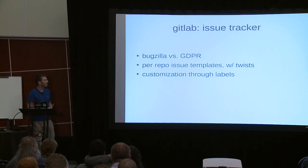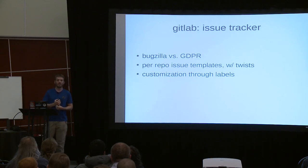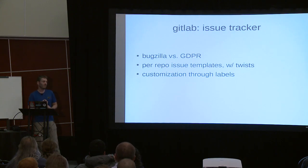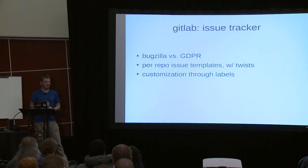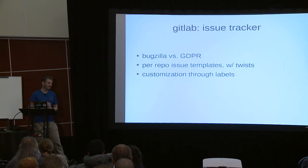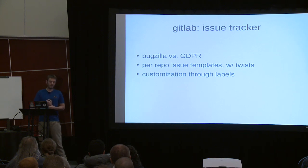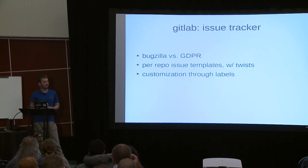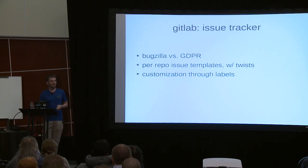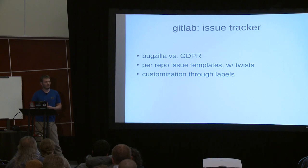There's also an issue tracker. The FDO admins are a bit freaked out about privacy regulations because Bugzilla looks like a private submission except that at the other end it fans out to your public mailing list. They would like to sunset that. GitLab allows per-repo issue templates — for big projects you can have a bug report template for Intel DRM, one for DRM AMD, one for DRM overall. Customization is entirely through labels, which is a bit unstructured but fairly powerful.